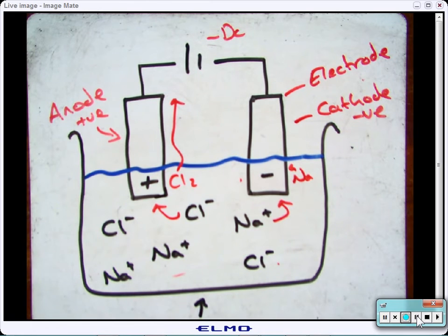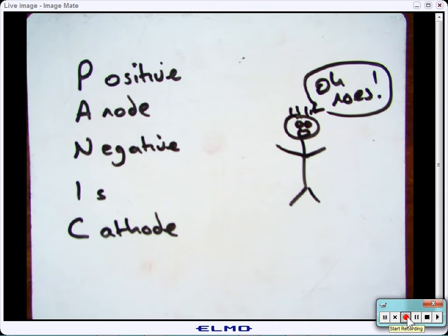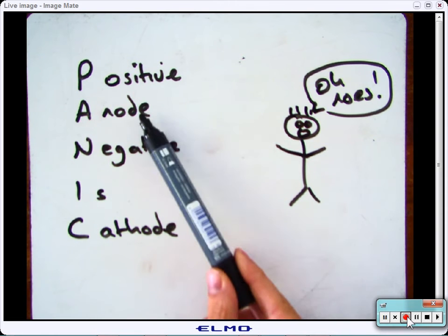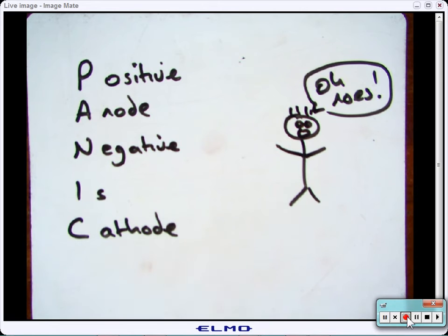In every bit of electrolysis, both oxidation and reduction are occurring. We'll go through what that means now. And if you want to know a way to remember which is positive, which is negative from the anode and cathode, use this: PANIC. Positive, anode, negative is cathode.